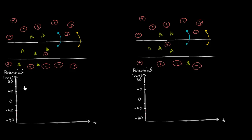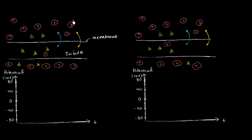We've already seen that when a neuron is in its resting state, there is a voltage difference across the membrane. In these diagrams, this right over here is the membrane, this is the inside of the neuron, and this right over here is the outside.